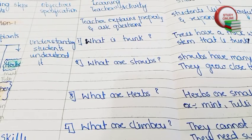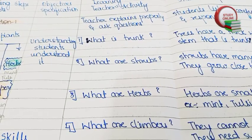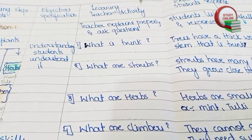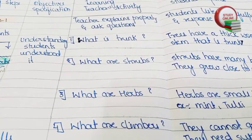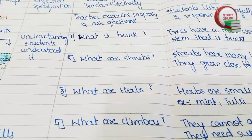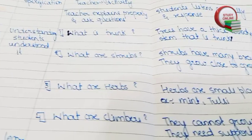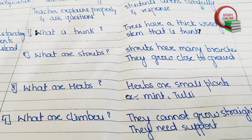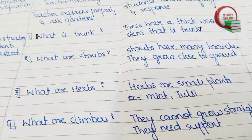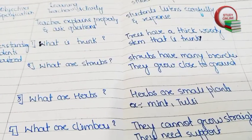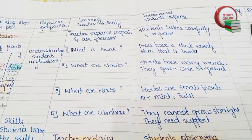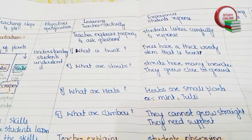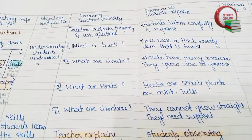Here you can see Presentation Part 1. In the presentation part, you can see the list of questions that we have to ask: what is a trunk, what are shrubs, what are herbs, what are climbers — like this we have to ask questions to students. After that the student will answer. This is the expected answer that we expect from students.